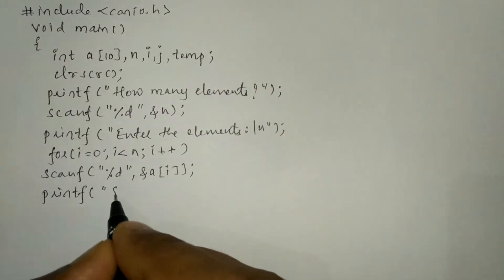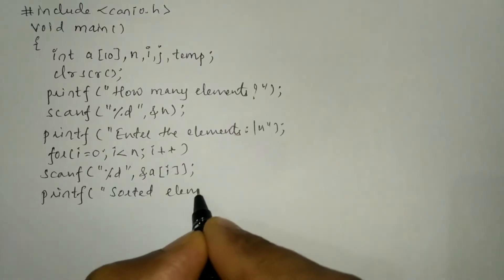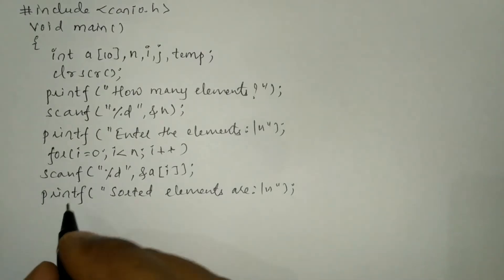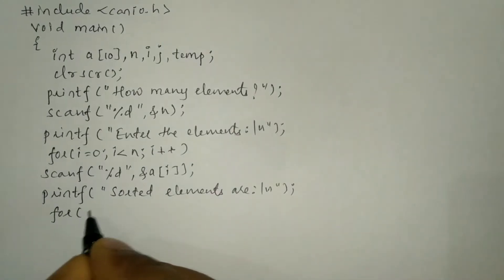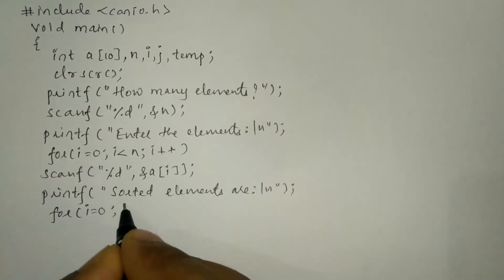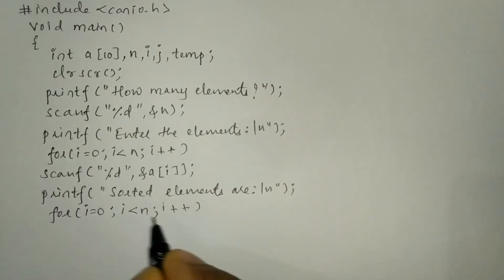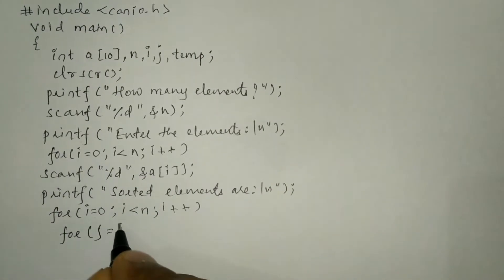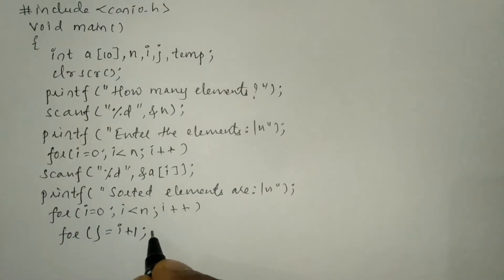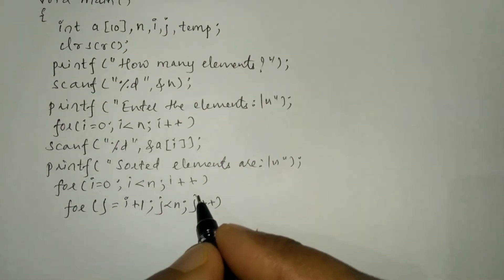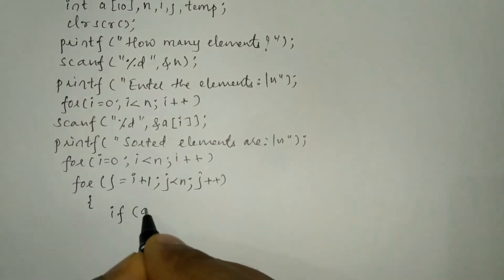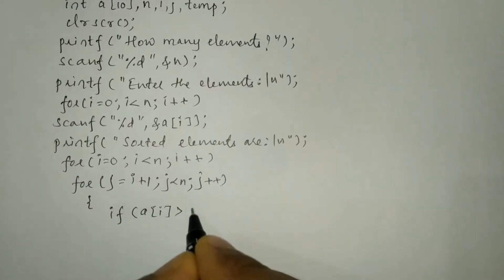After receiving the elements, we print 'sorted elements are' using a printf statement with a newline. Then we use a nested for loop structure: the outer loop runs for i equals zero, i less than n, i plus plus; the inner loop runs for j equals i plus one, j less than n, j plus plus. Inside, we check the condition: if a[i] is greater than a[j].